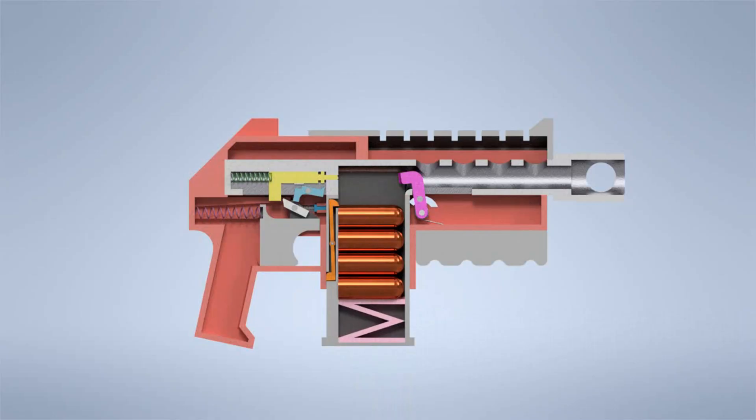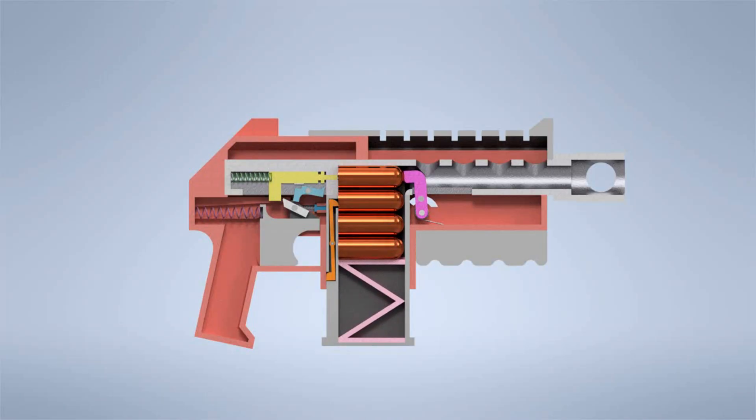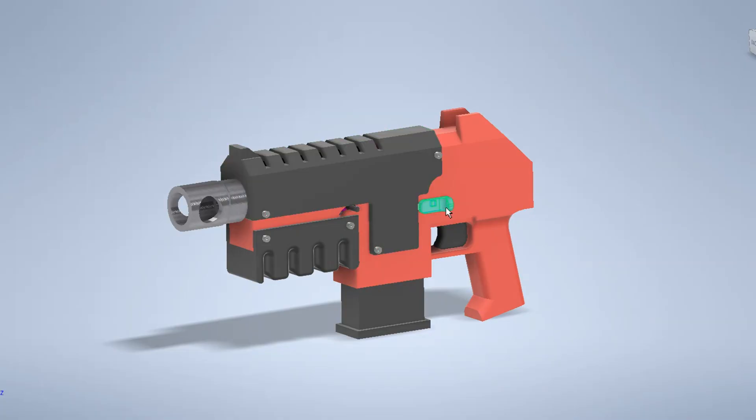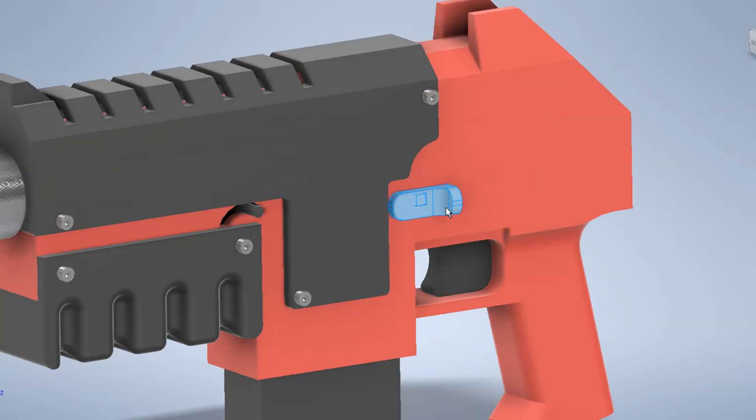Once the magazine is inserted, a magazine catch locks it securely in place. The release switch is located here, allowing the magazine to be quickly removed when it's time to reload.